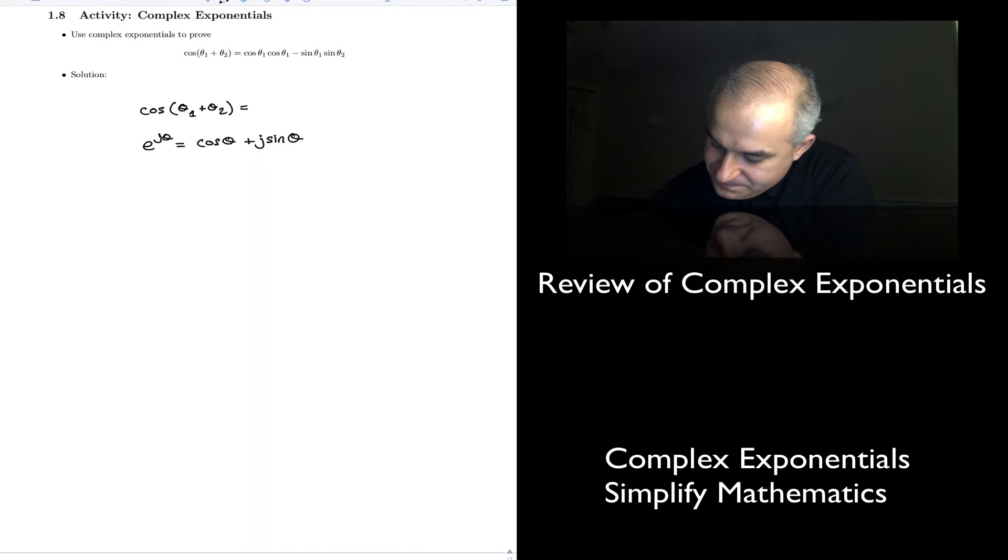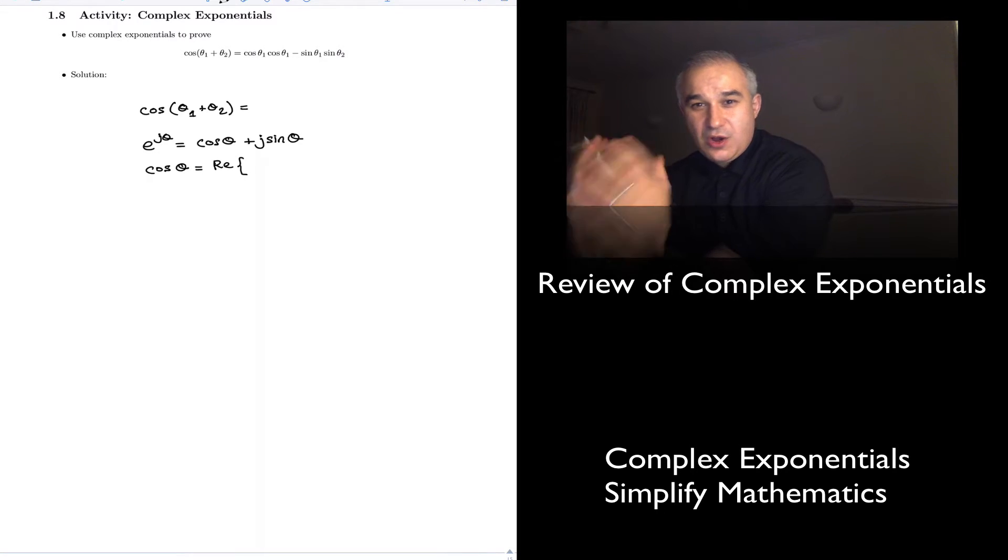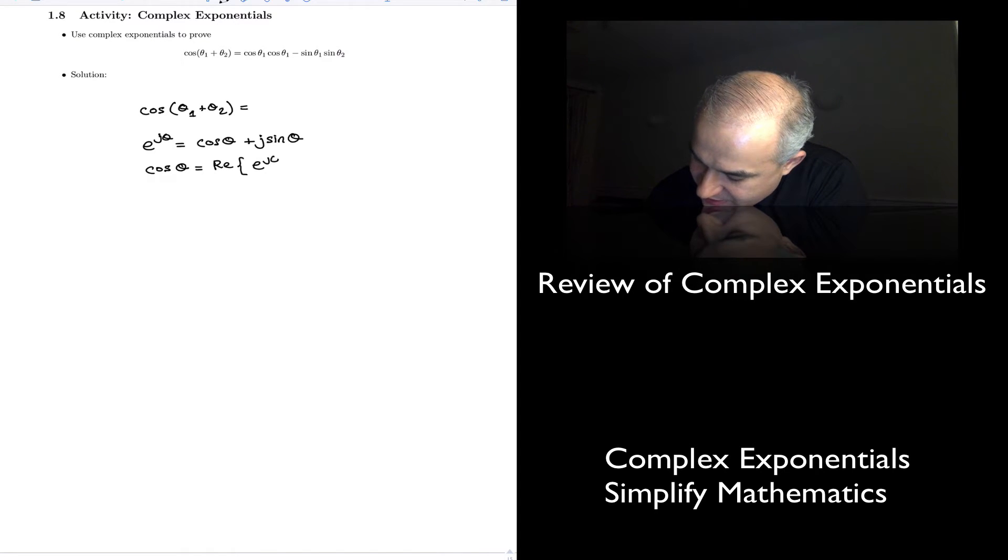Or you could say that the cosine is the real part of e to the j theta. So you have this. Cosine of theta is equal to the real. That's the real operator. It picks an expression and only takes out the real part of the expression of e to the j theta.